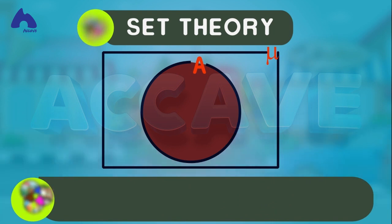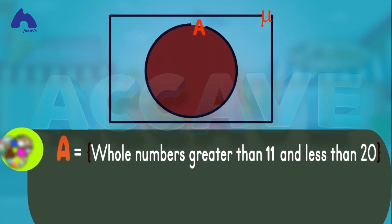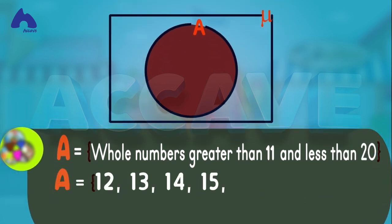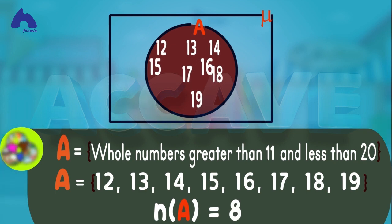For example, if set a is equal to whole numbers greater than 11 and less than 20, so set a would be 12, 13, 14, 15, 16, 17, 18, and 19. So, the cardinality of set a will be equal to 8. That is the number of elements in set a.